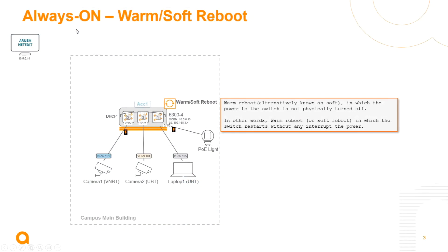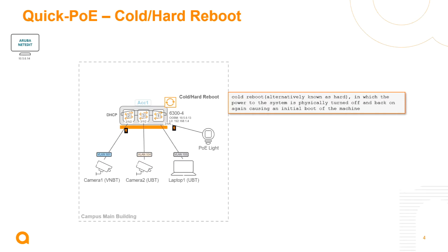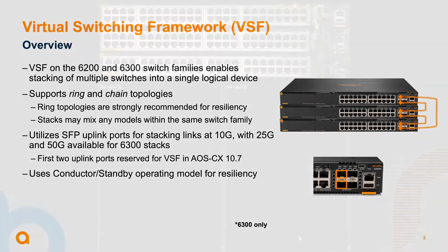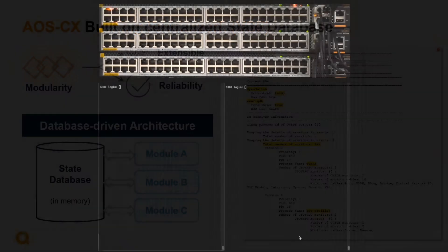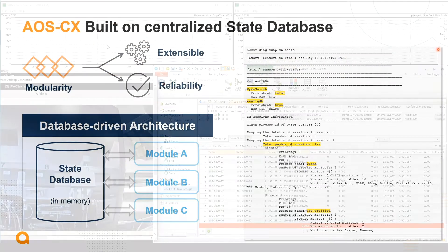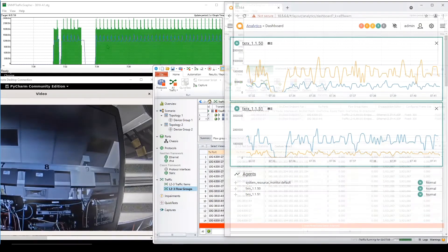We then explored power over Ethernet, especially with the advanced capabilities in AOS CX of always-on PoE and quick PoE. Moving on, we then learned about virtual switching framework in the access layer and how it can benefit our switches at the edge. We then explored AOS CX resiliency and high availability using virtual switching extension, or VSX.